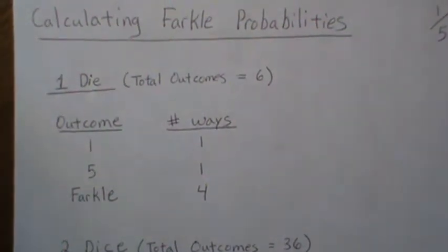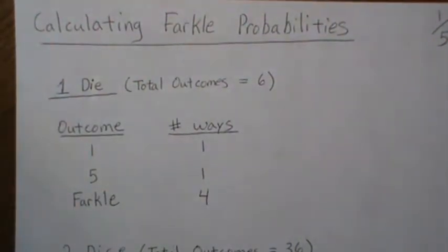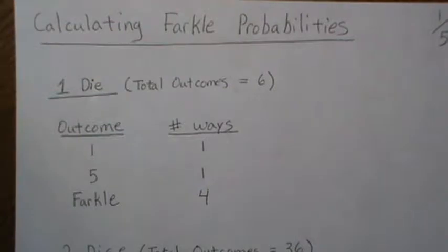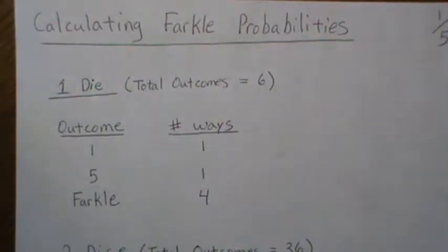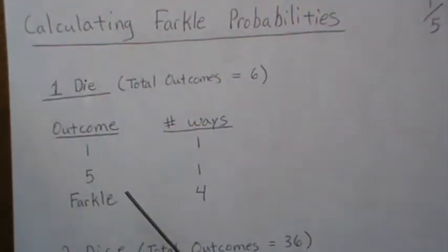At any point in time you could have six dice in your hand or one die, and we're going to calculate probabilities of scoring. If you don't score, it's called a Farkle. So if you Farkle, meaning you don't score, you pass the dice to the next player and it's their turn. We're going to start at one die, then two, then three, and work up to six.